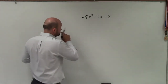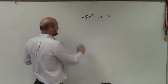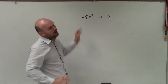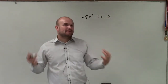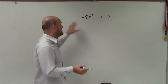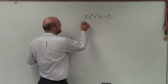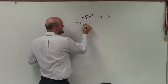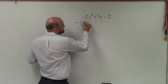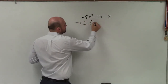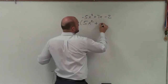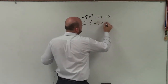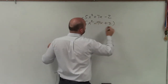Before I get to that, whenever I'm dealing with factoring, I always like my leading coefficient 'a' to be positive. So I'm going to factor out a negative 1 first. Factoring out a negative 1, I'm left with positive 5x squared minus 7x plus 2.